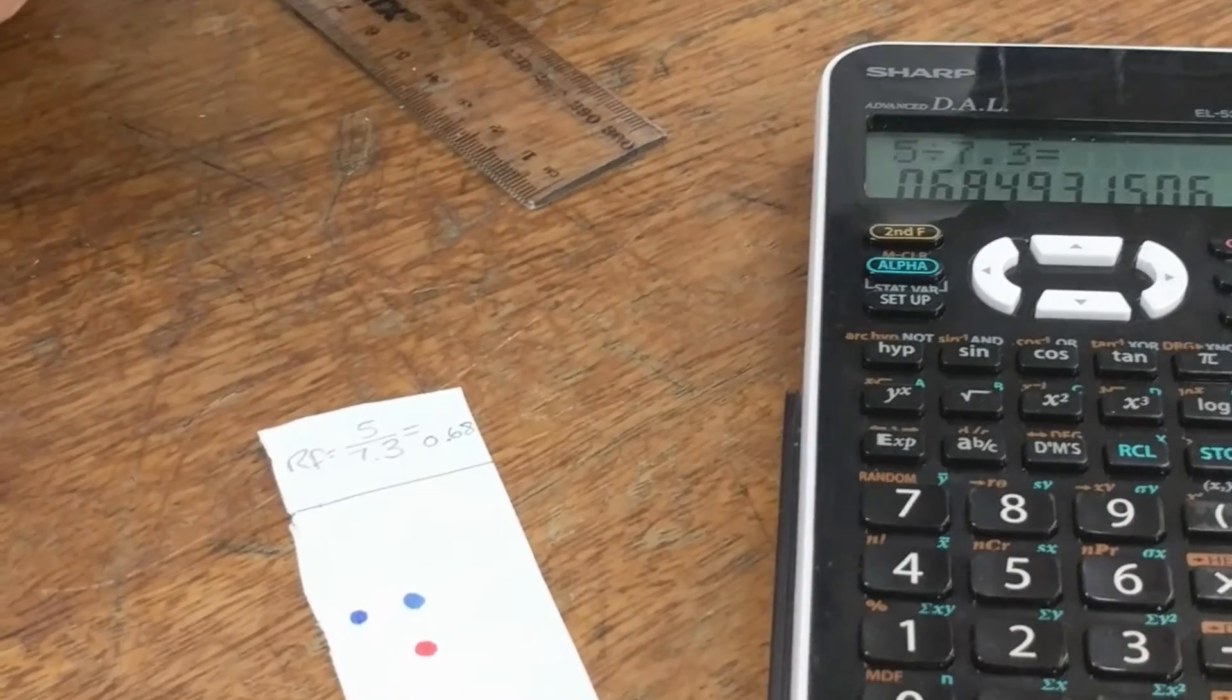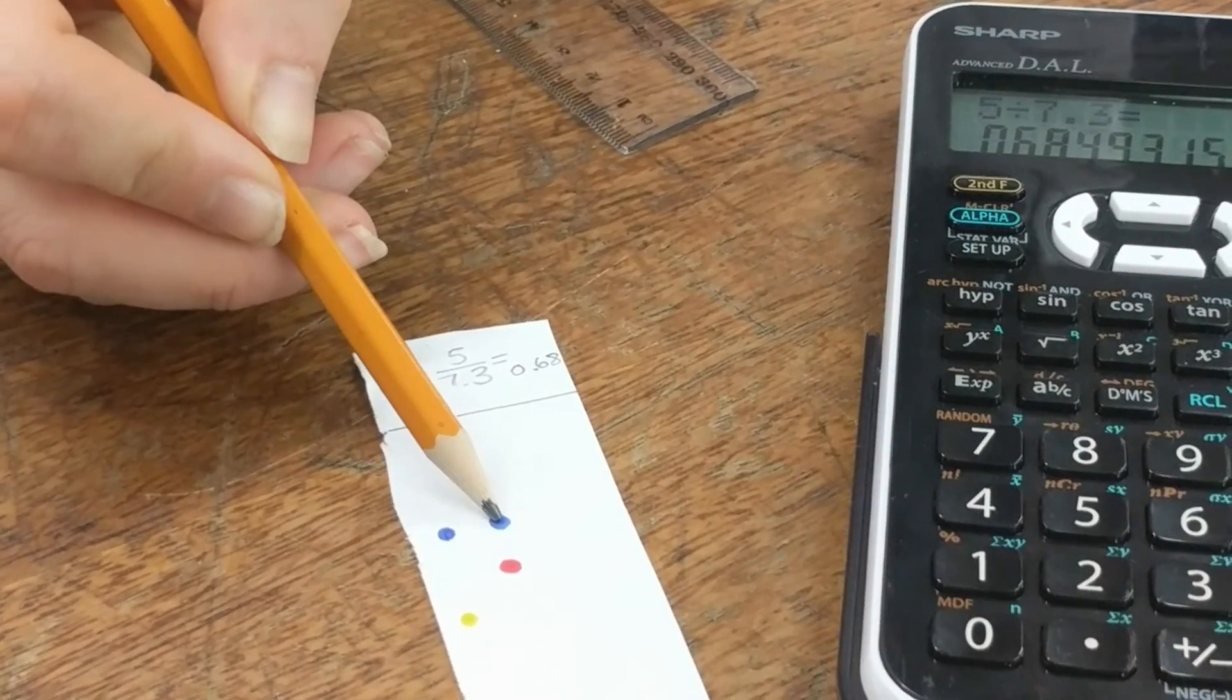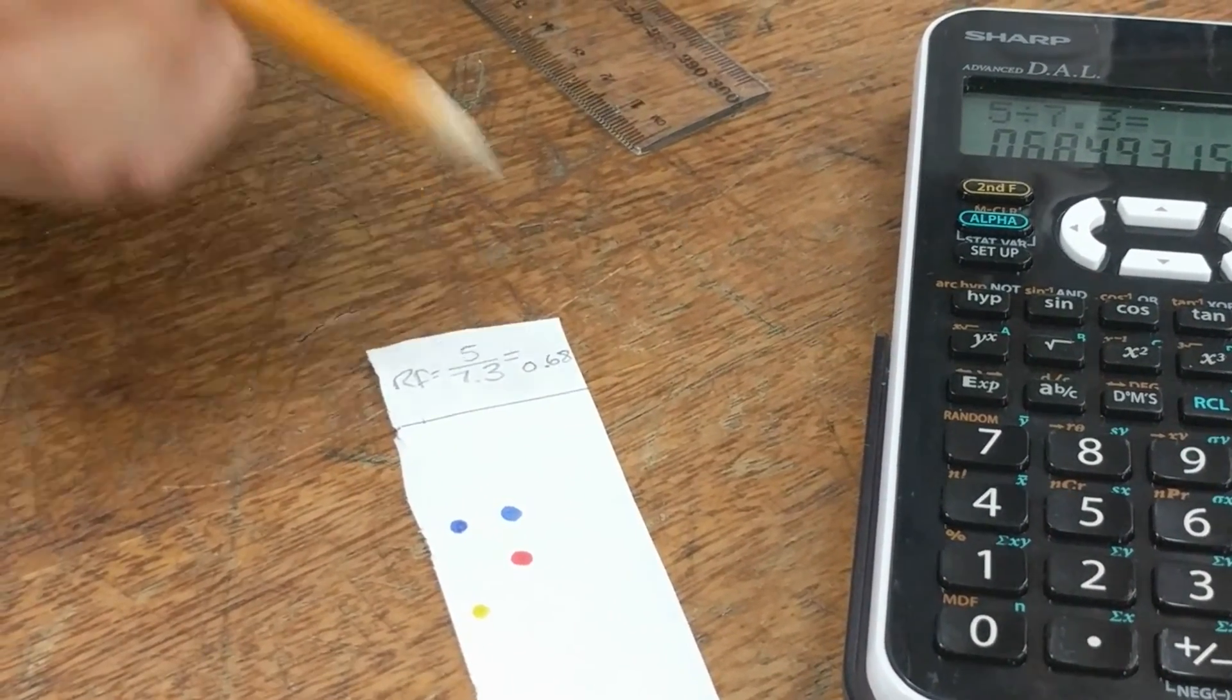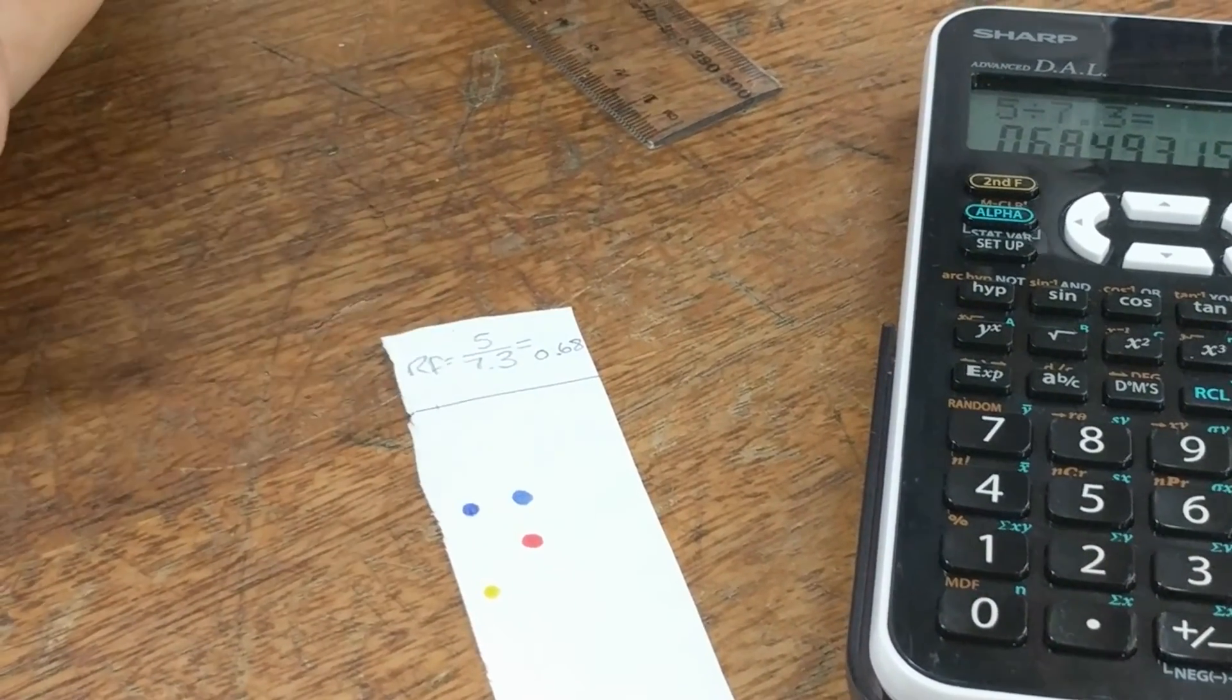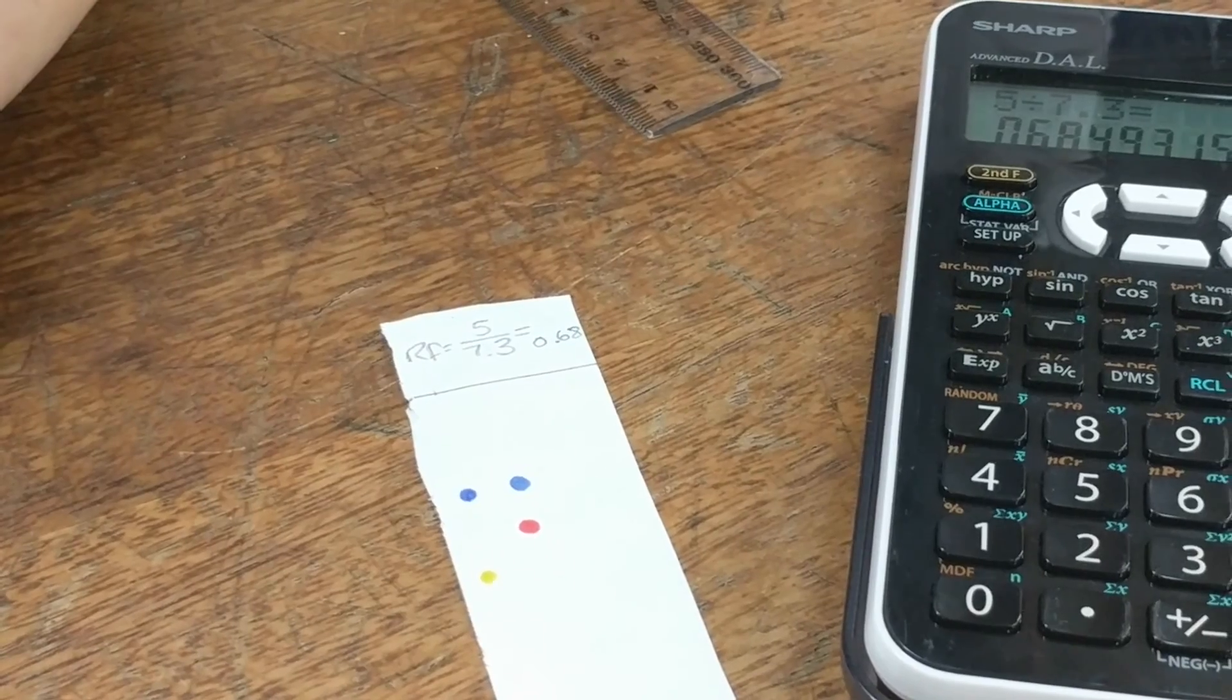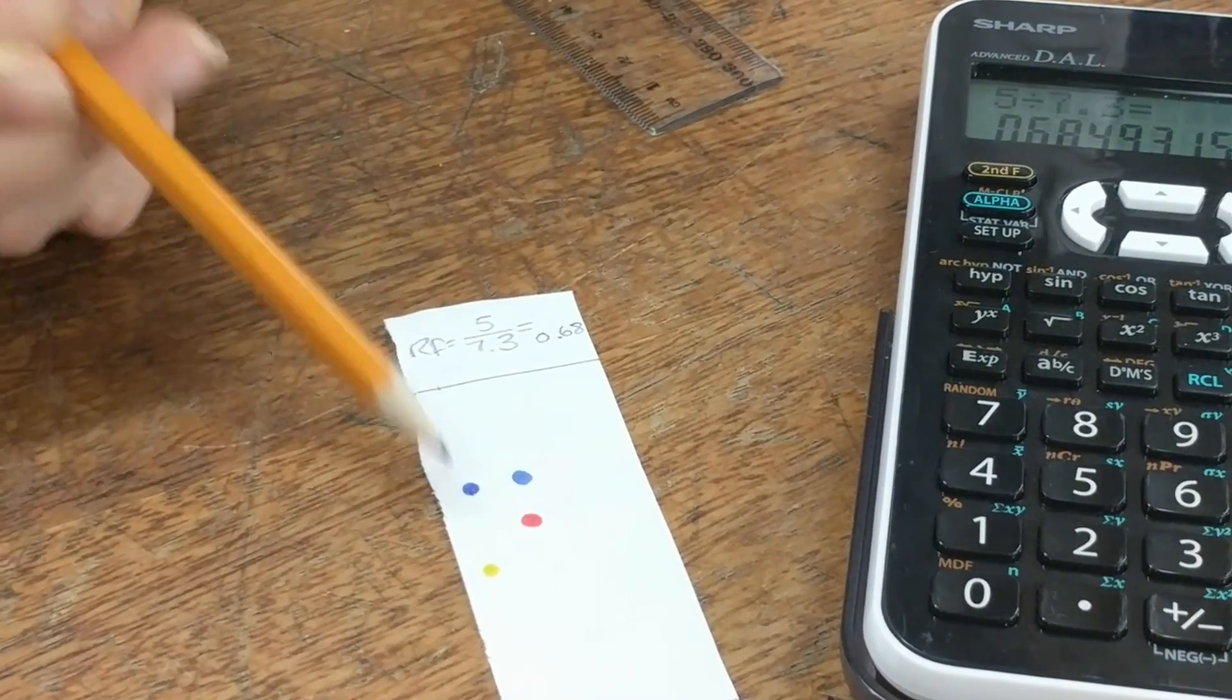And that's how we calculate the RF value. If we did it for this spot, we would find that it would be exactly the same. And therefore, it's a more accurate way of identifying common substances between inks. And we could do this for each spot that we've got.